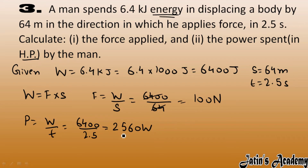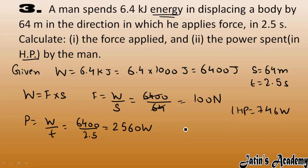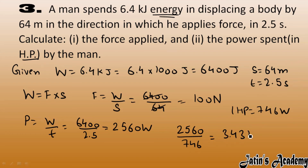One horsepower equals 746 watts. To convert, divide your answer by 746: 2560 divided by 746 gives 3.43 horsepower. In this way you are able to convert your power from watts into horsepower.